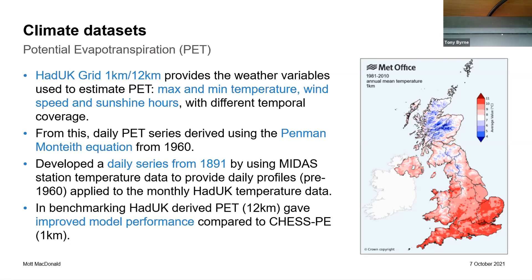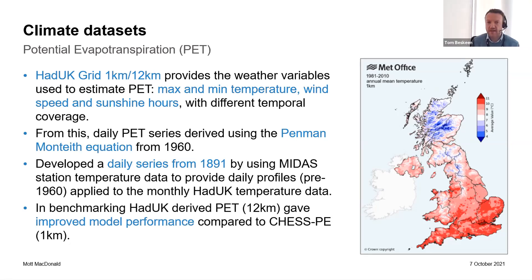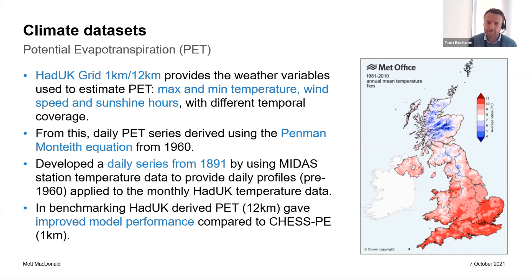To work out a PET series prior to 1960 that had a daily time step was a bit more complicated. The HadUK data is only available for all variables as monthly prior to 1960. So we looked to supplement it with MIDAS station data, which provided us with daily profiles within each month to allow us to create a dataset that was daily from 1891. At the time we did some benchmarking on this dataset against CHESS-PE and found that it delivered slightly improved model performance compared to that dataset.